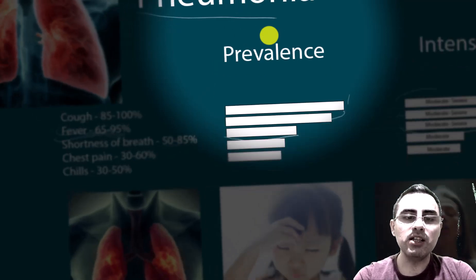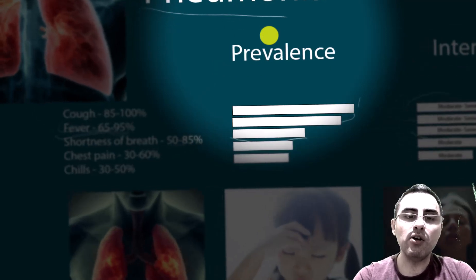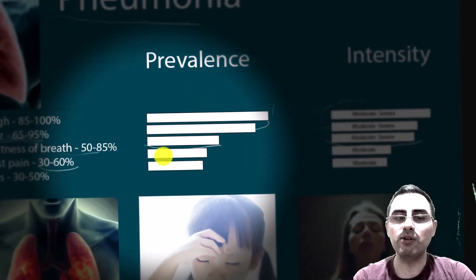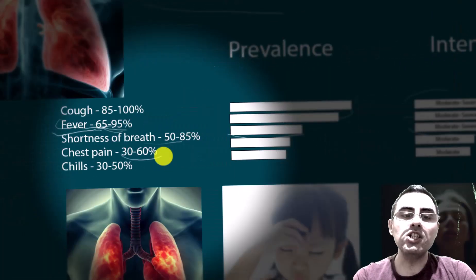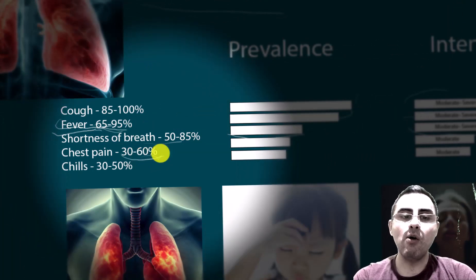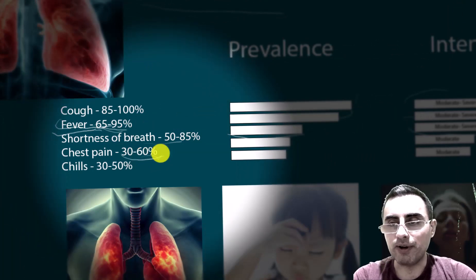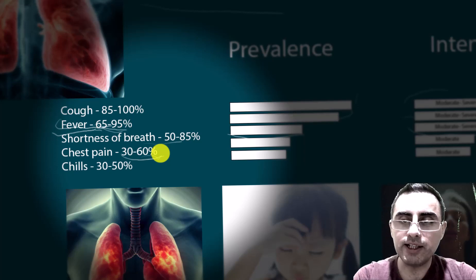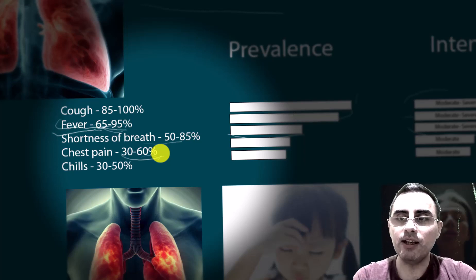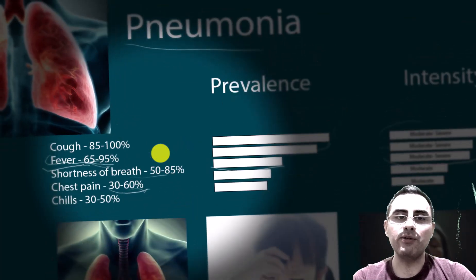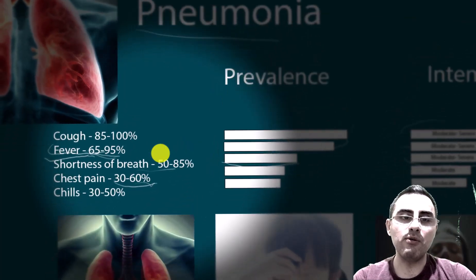Chest pain occurs in around 60% of pneumonia cases and is moderate in intensity. Chest pain increases during coughing or deep breathing — if chest pain increases with deep inhalation or coughing, this is also one of the symptoms of pneumonia.